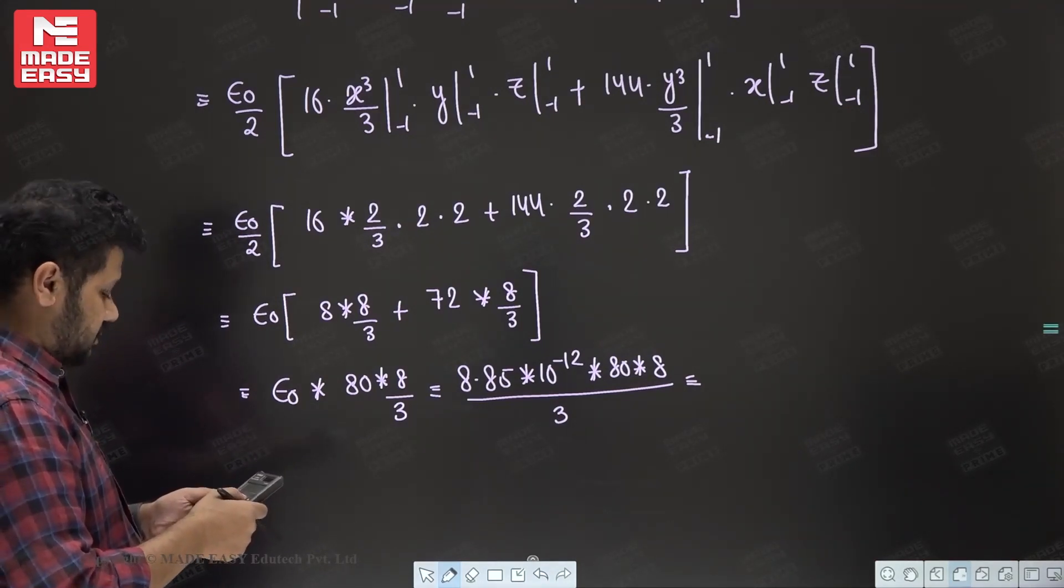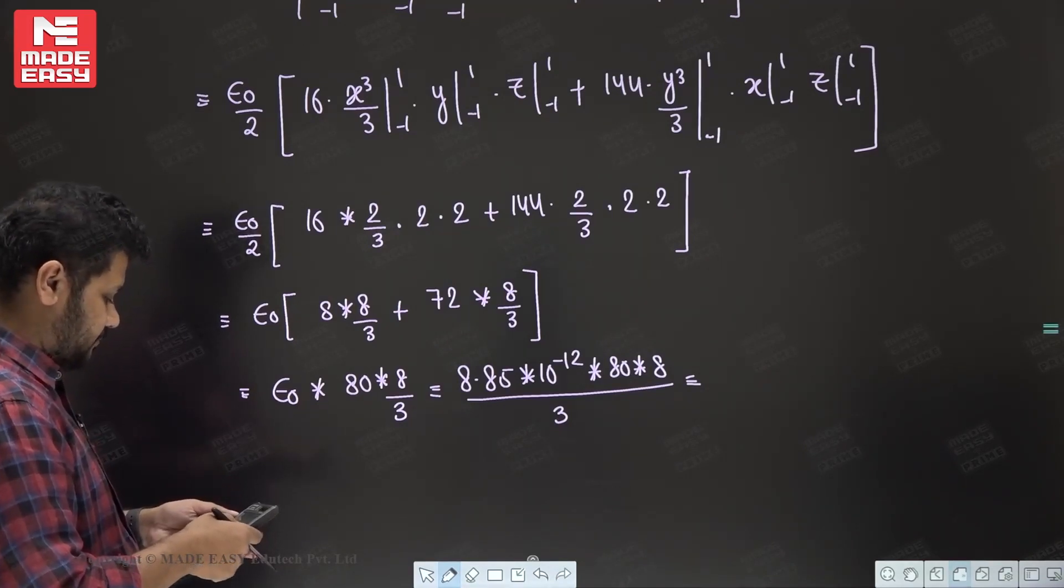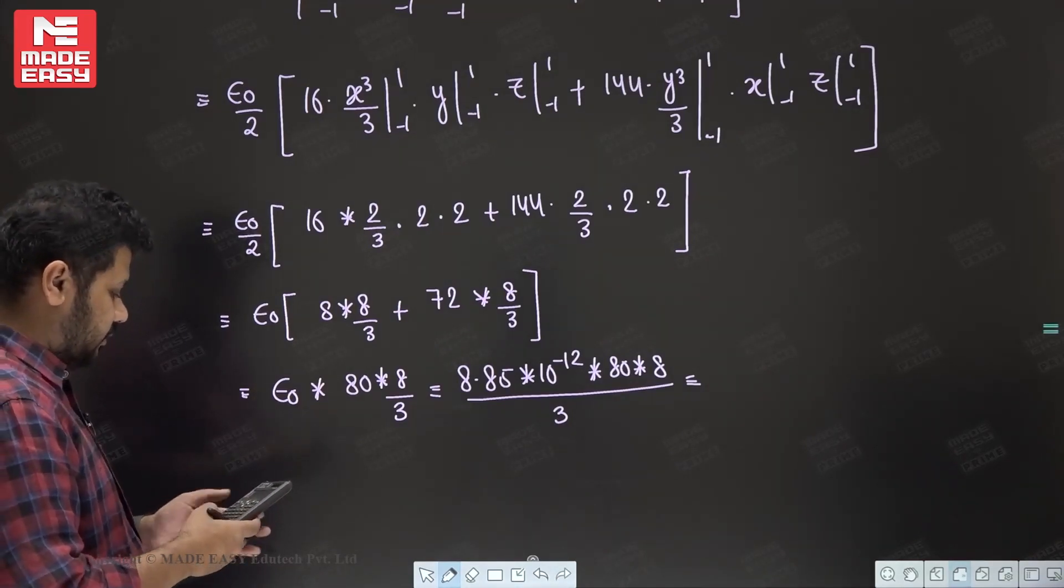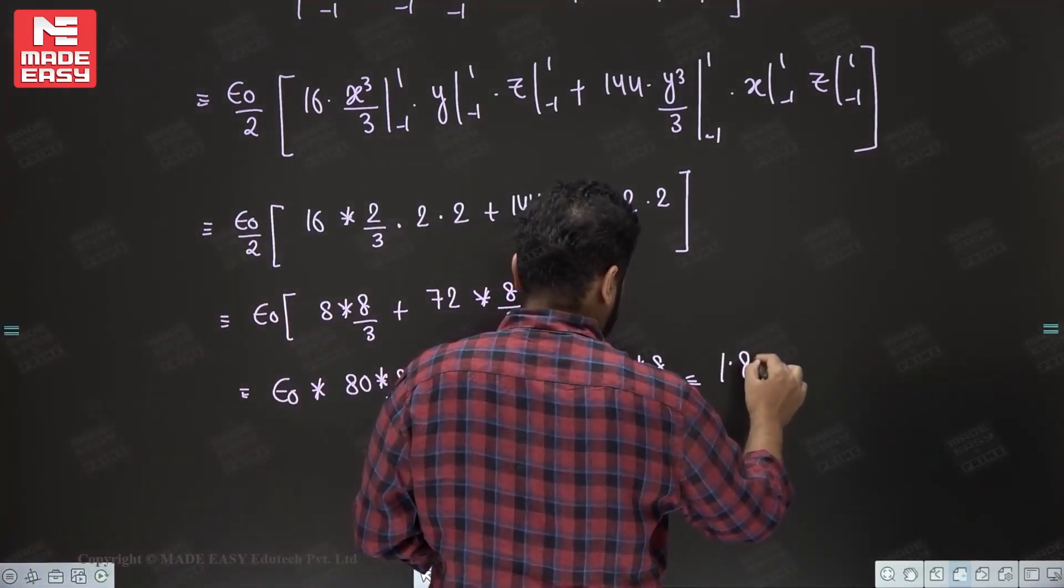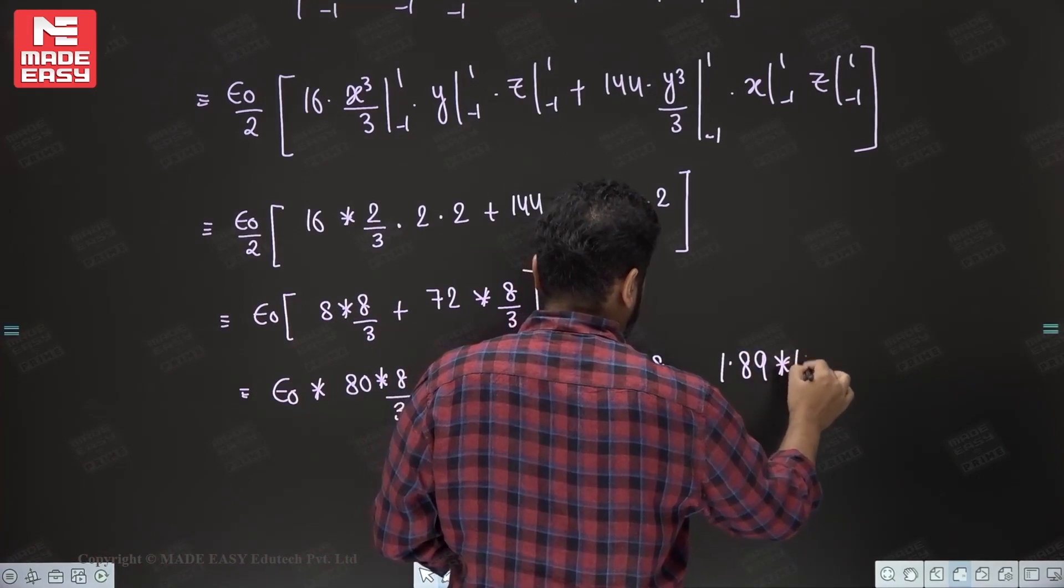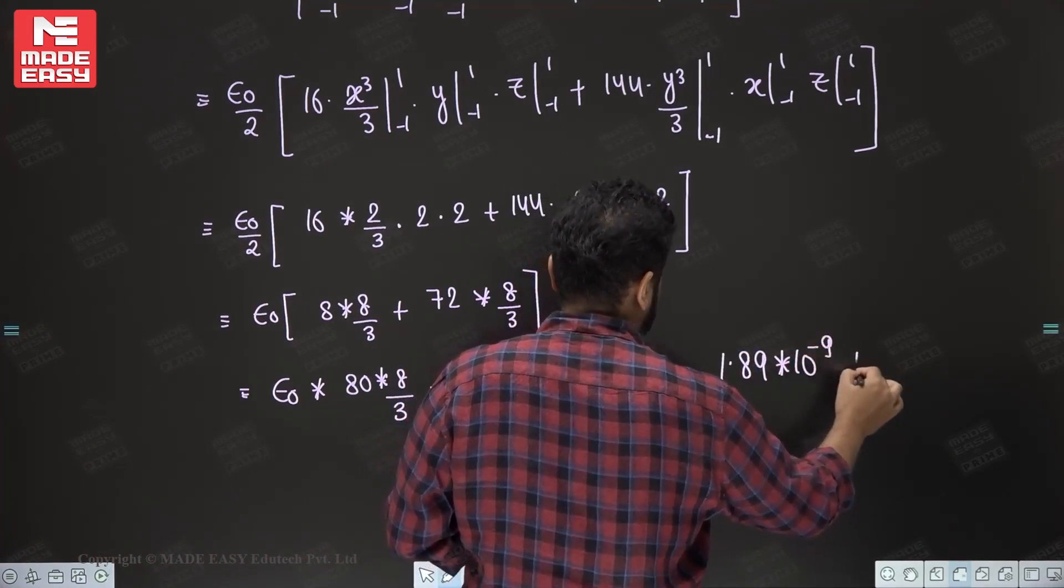So it is coming, just I will put it in the 1.89 × 10⁻⁹, 1.89 × 10⁻⁹ joules.